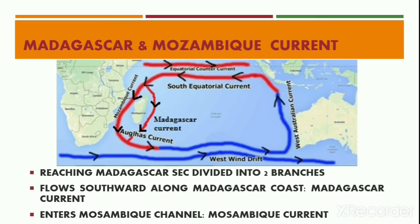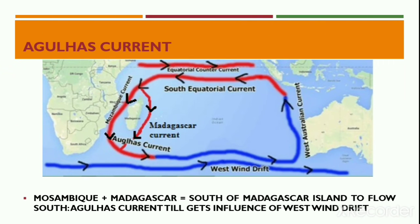One branch flows along the east coast of Madagascar and is termed the Madagascar Current. The other branch enters the Mozambique Channel and is termed the Mozambique Current. Both the Mozambique and Madagascar currents join south of Madagascar Island, and the combined flow moves further southwards as the Agulhas Current.